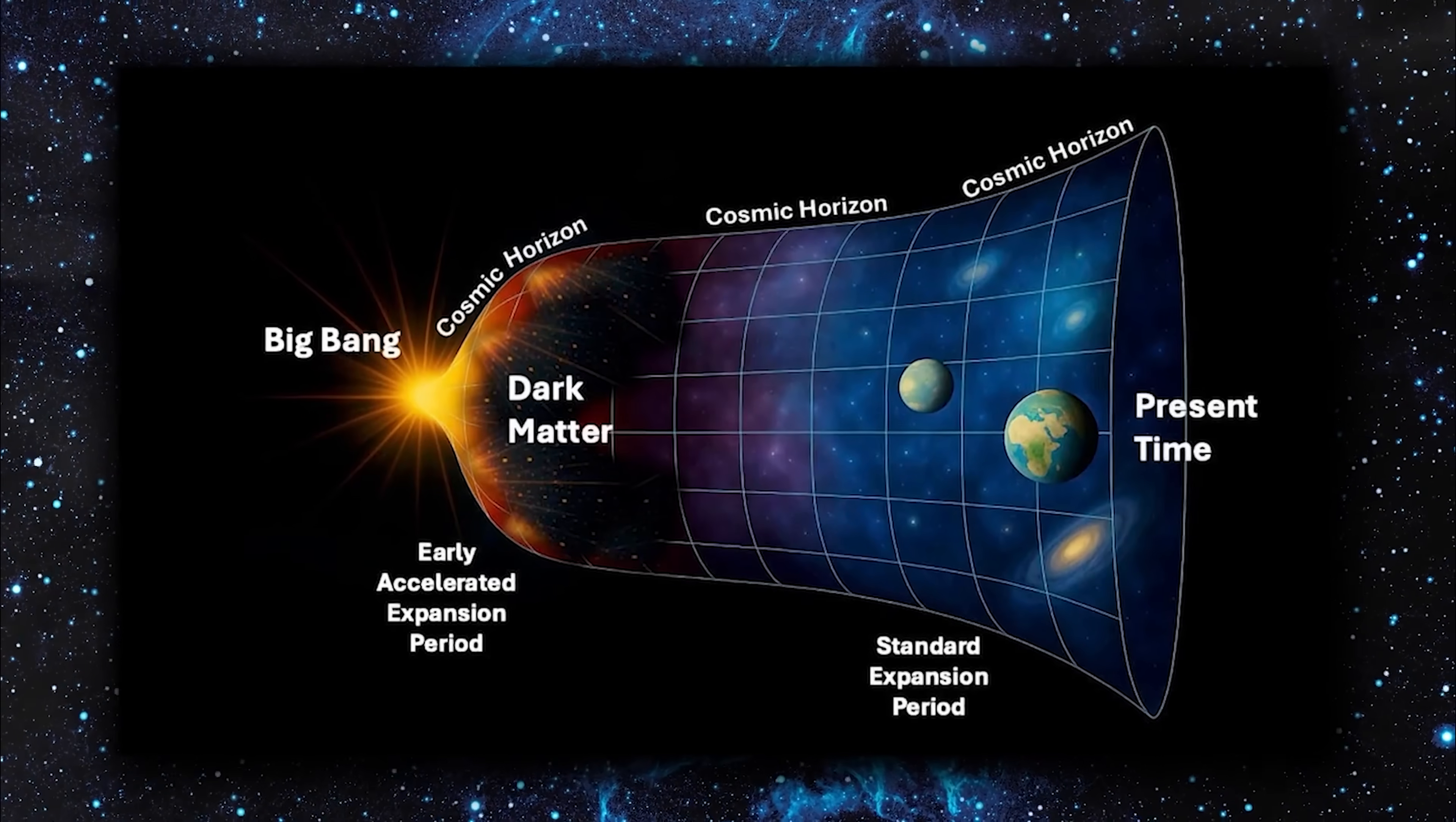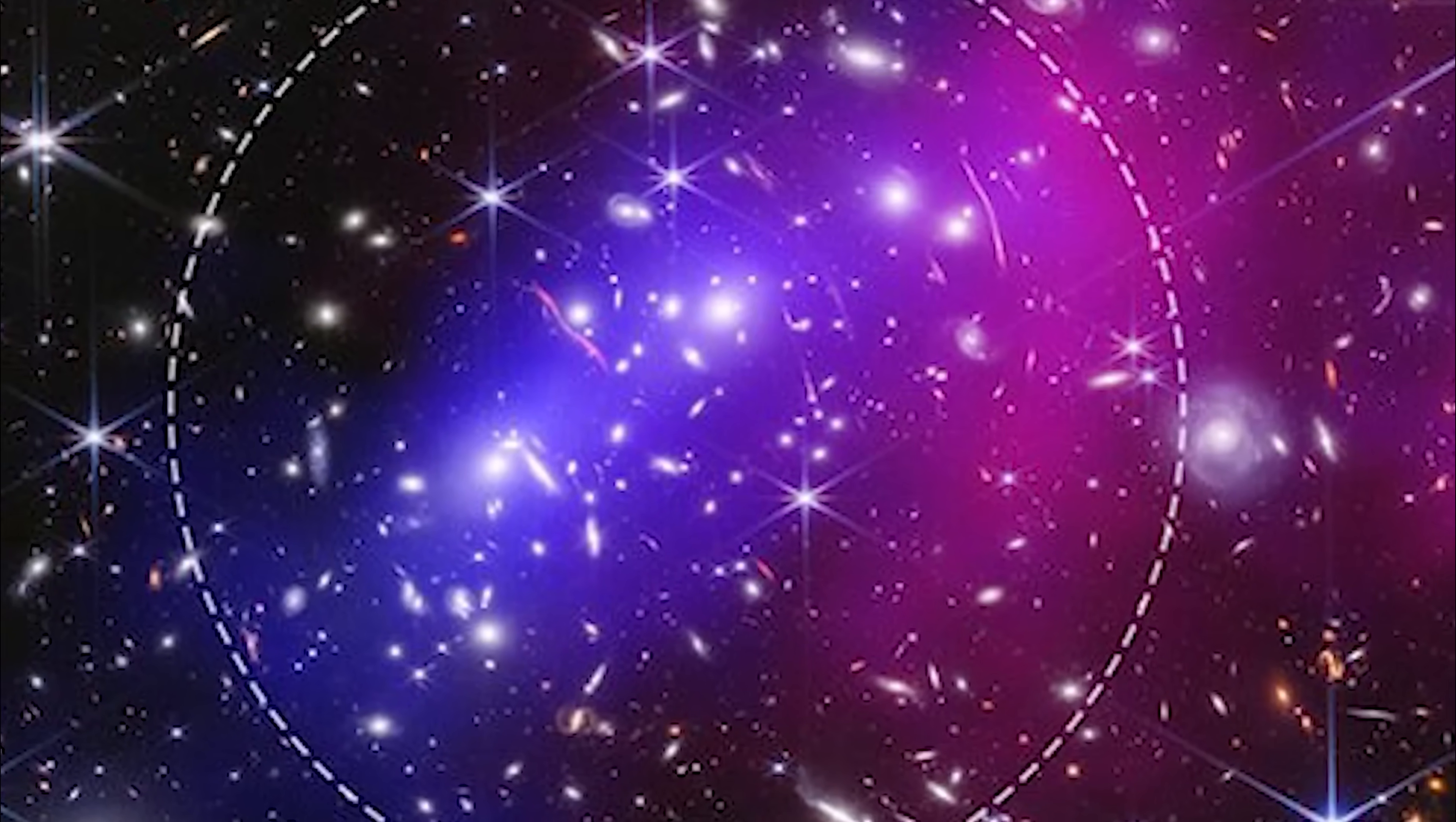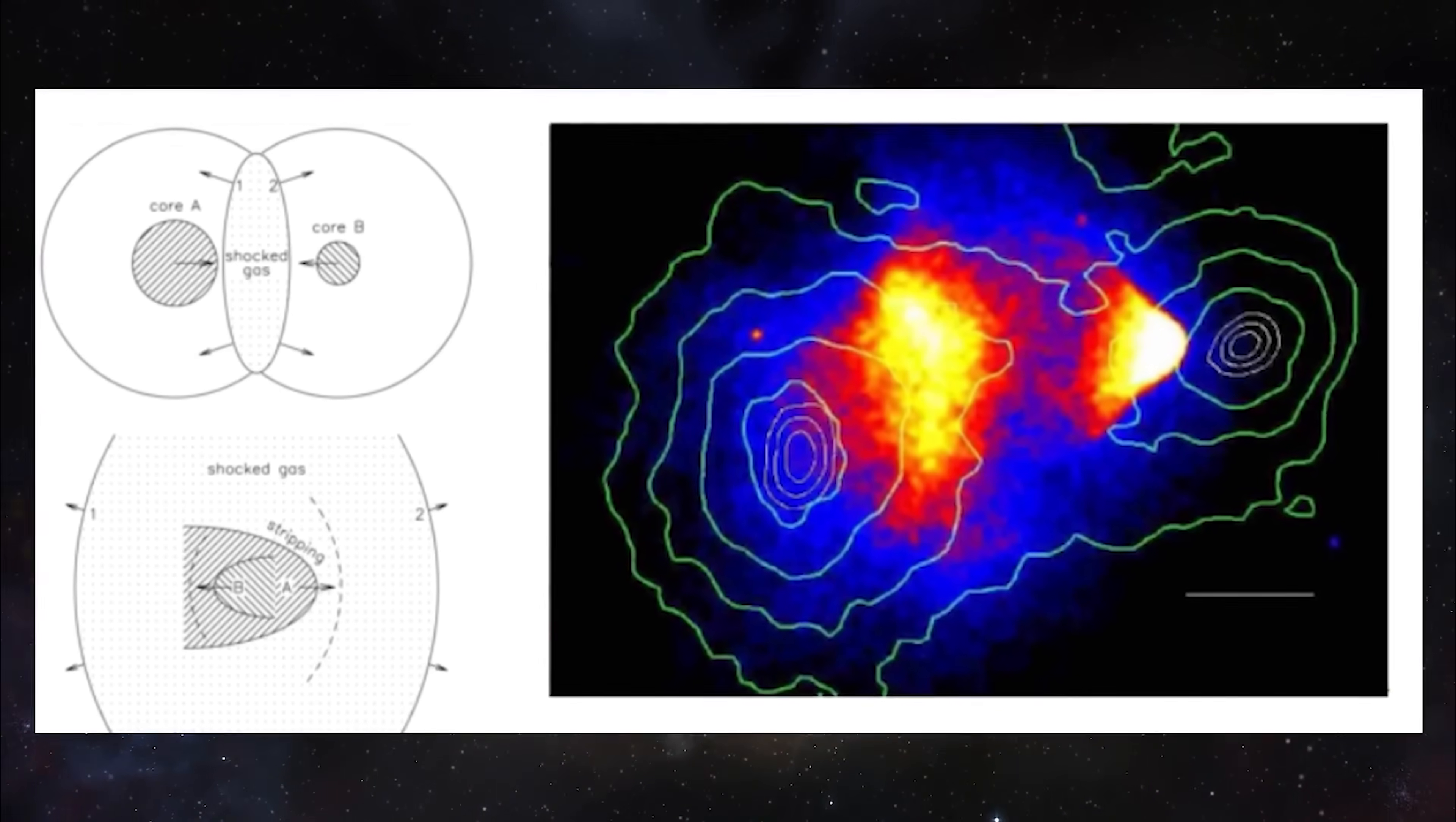According to modern models, most of the actual matter in the universe should be dark matter. One of the strongest pieces of evidence comes from observations of the famous bullet cluster. In images of this cosmic collision, the glowing purple regions show ordinary gas left behind after two galaxy clusters smashed together. But most of the mass highlighted in blue sailed straight through the collision without interacting, which strongly suggests it's dark matter.